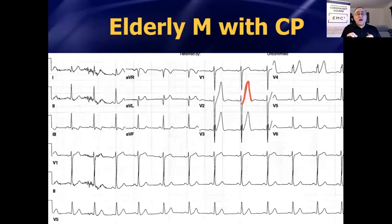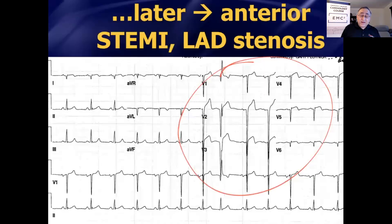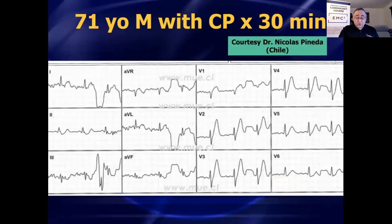Had we known back then what we know now, with the current set of guidelines, we would have activated the cath lab right here. That's what the October 2022 ACC/AHA guidelines now say. If you see the de Winter T wave pattern, you don't need to sit on it and wait — you can go ahead and activate the cath lab right now, because this is going to turn into an anterior STEMI. You might as well get them to the cath lab sooner rather than waiting.